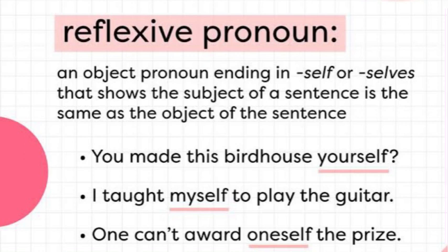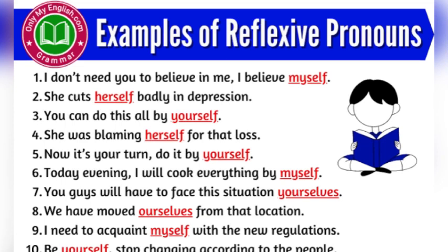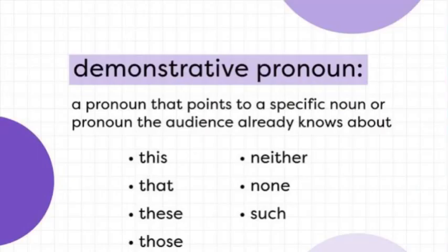'One can't award oneself the prize' — بندہ خود کو prize نہیں دے سکتا۔ اس slide میں مزید examples mention کی ہیں — آپ ان کو آرام سے دیکھئے گا۔ اگر میں سب discuss کروں تو video بہت لمبی ہو جاتی ہے۔ جب 'myself'، 'yourself'، 'themselves' استعمال ہوتے ہیں اور subject کی طرف refer back کر رہے ہوتے ہیں تو وہ reflexive pronouns ہوتے ہیں۔ آپ نے خود بھی examples سے چیزوں کو سمجھ لینا ہے۔